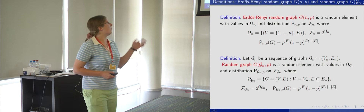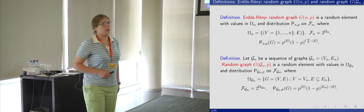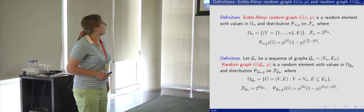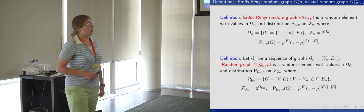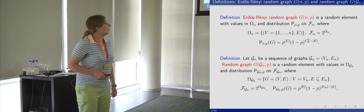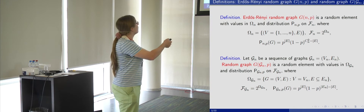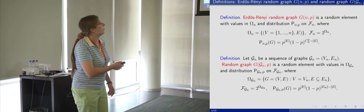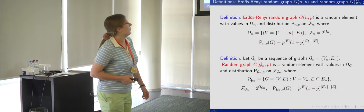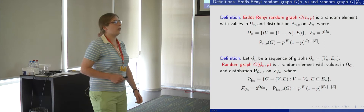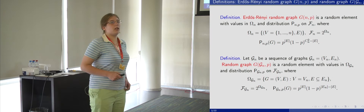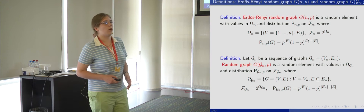And now a more general model of a random graph. Suppose we have a sequence of graphs G_N; then the random graph G(G_N, P) is a random element with values in omega(G_N) and distribution P(G_N, P) on F(G_N), where omega(G_N) is the set of all spanning subgraphs of G_N.